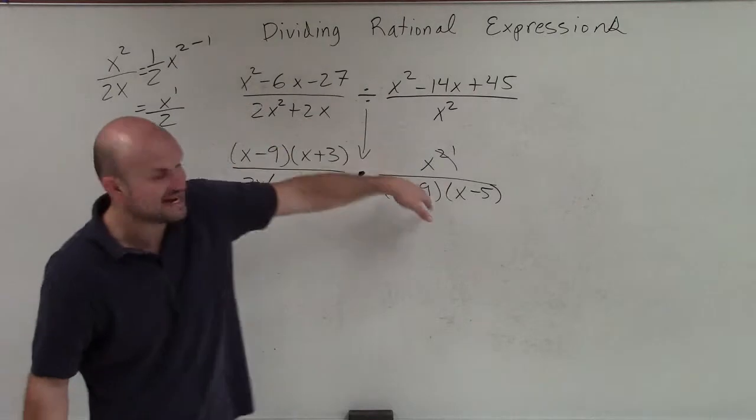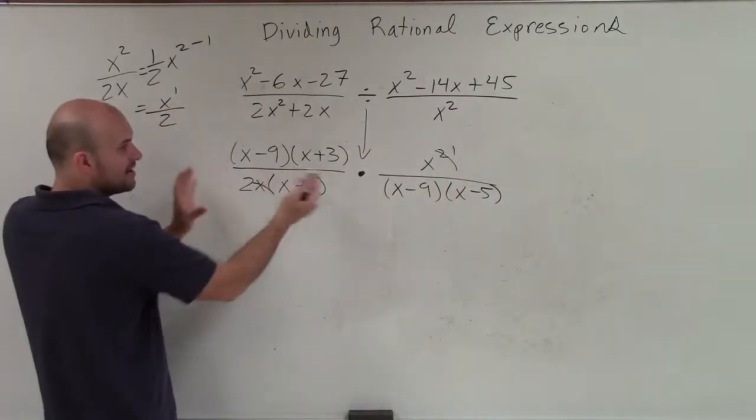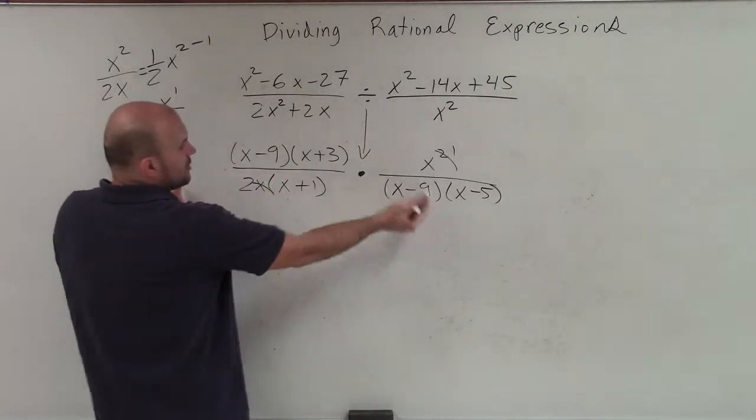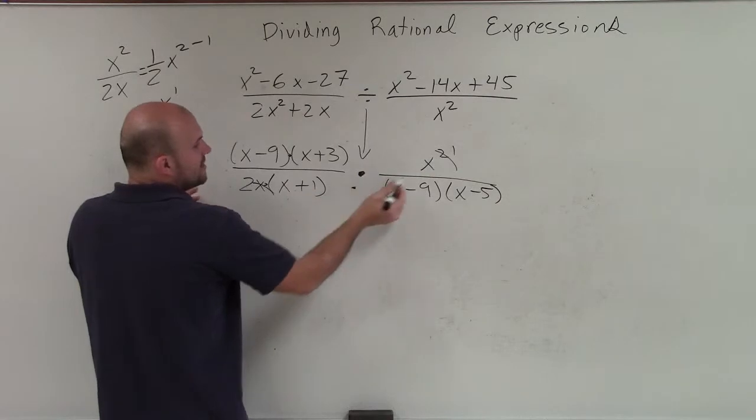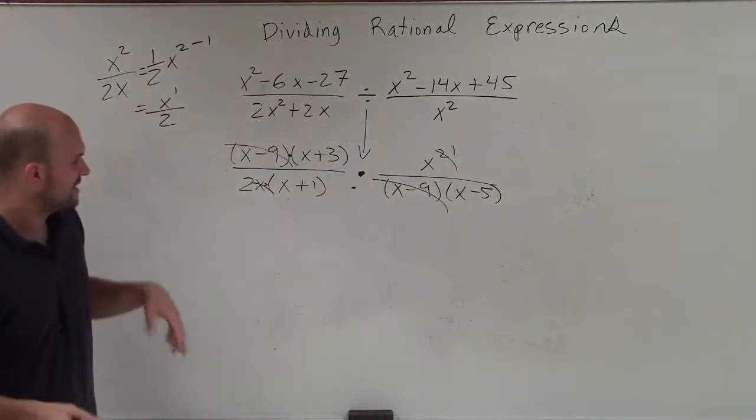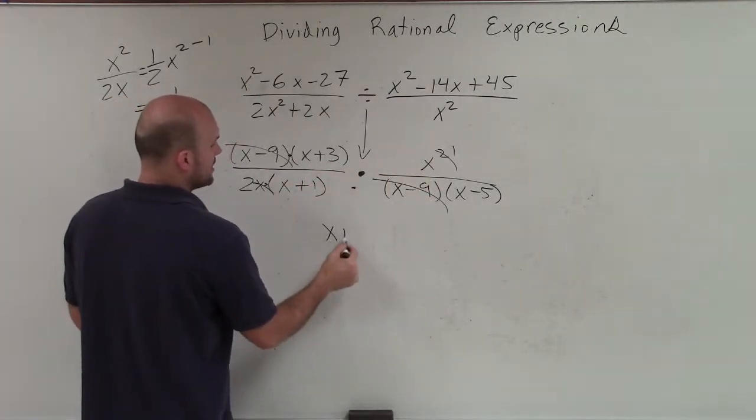Then we see an x minus 9 divided by an x minus 9, because I could combine these all together and put these 1 over each other. And you would see, oh, it's obviously divided. But we can cross over since everything is being separated by multiplication. So I can just divide them across, and that's OK.